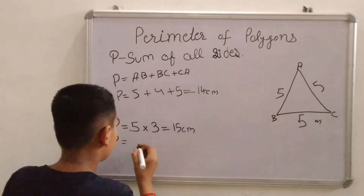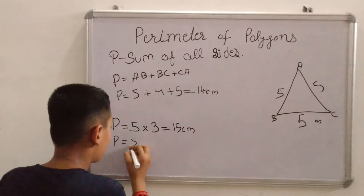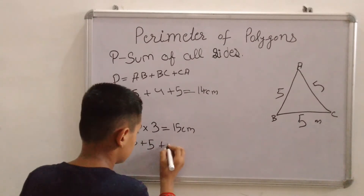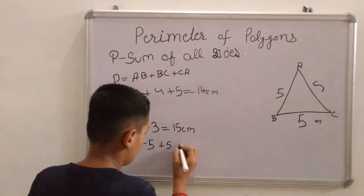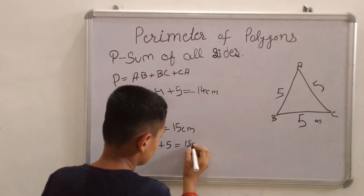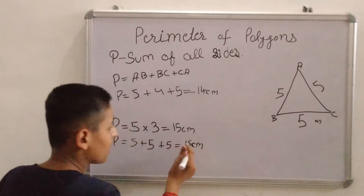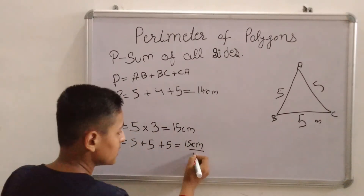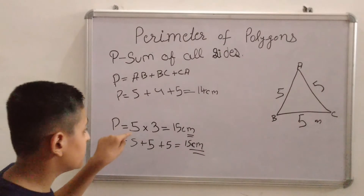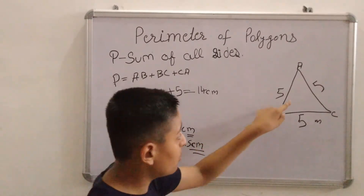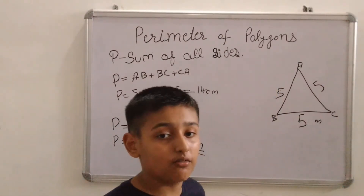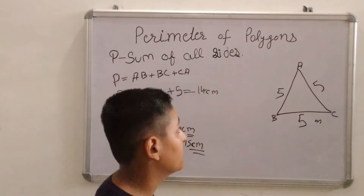5 plus 5 plus 5 equals 15 cm. Both answers are the same, meaning this shortcut method is applied on a triangle only when the triangle has all equal sides.